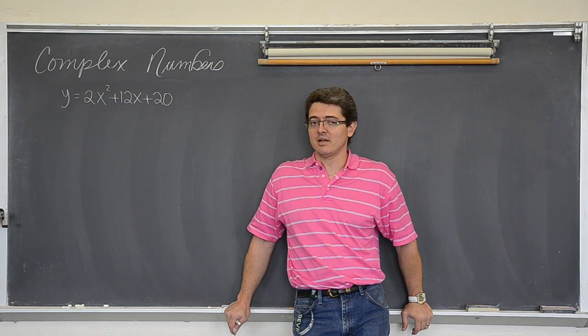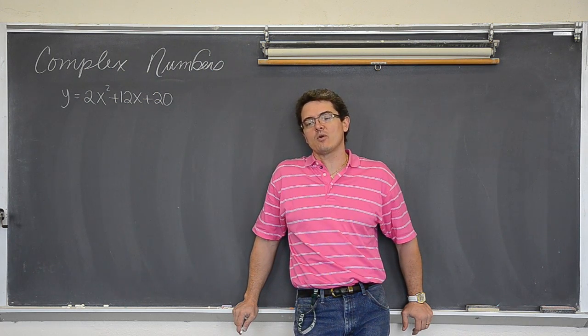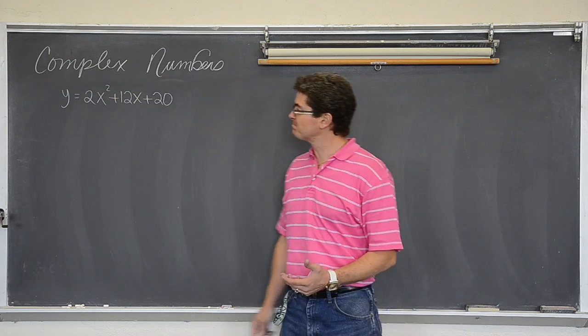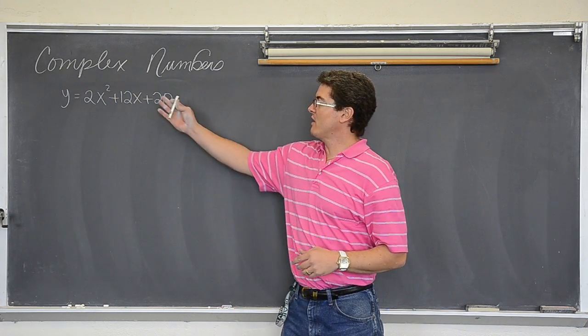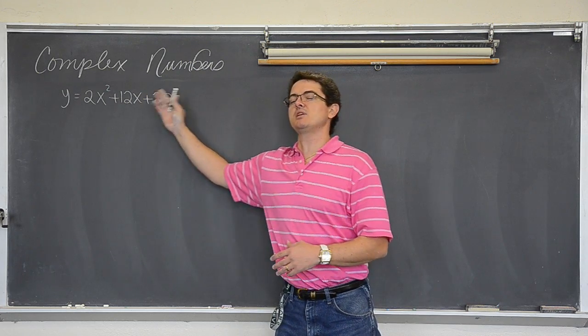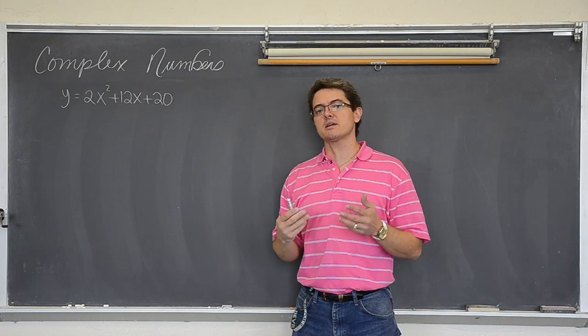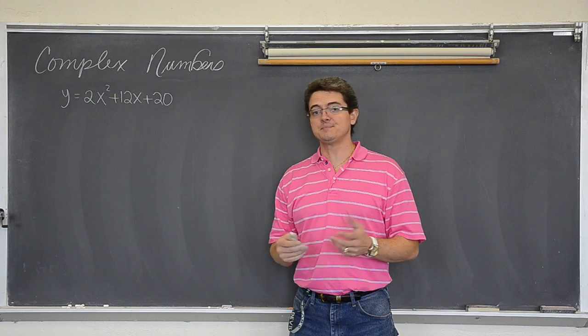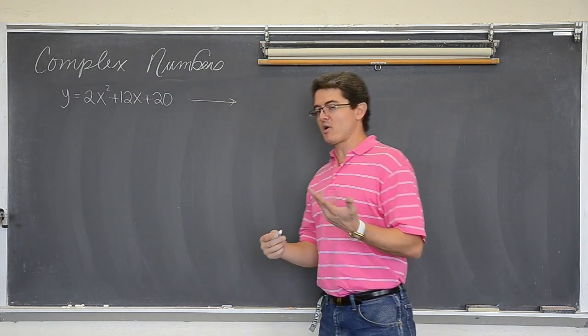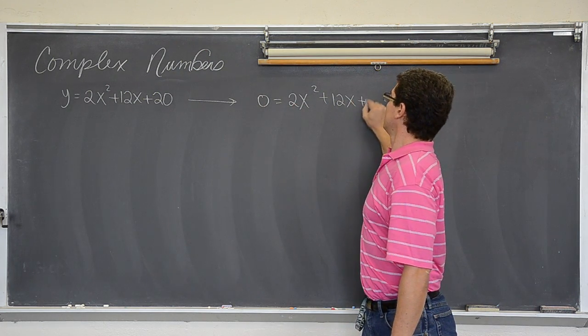So part two of complex numbers. We are going to try and solve or find out the solutions to this parabola. Now graphing when you talk about solutions you are talking about x-intercepts. So what I really want to find if I want to solve or find the roots or the solutions or the zeros, all the same thing, of this parabola, I want to know where it crosses the x axis. Now when you cross the x axis the y value is zero. So if this is a parabola what I am really solving in this problem is zero equals 2x² plus 12x plus 20.